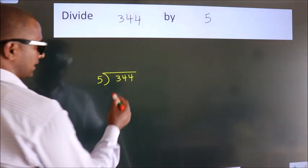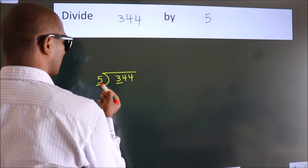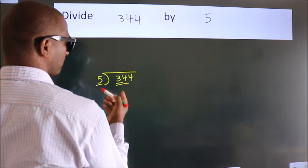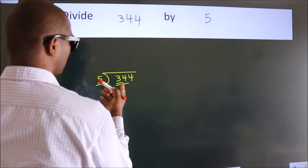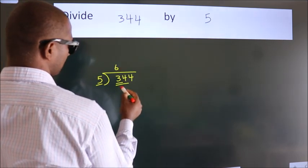Next, here we have 3, here 5. 3 is smaller than 5, so we should take two numbers, 34. A number close to 34 in the 5 table is 5 times 6, 30.